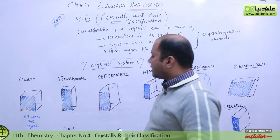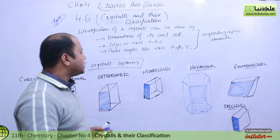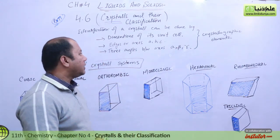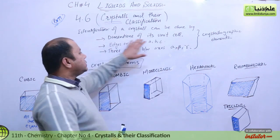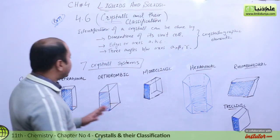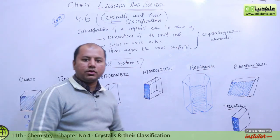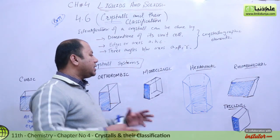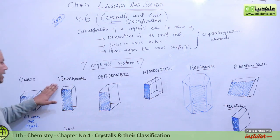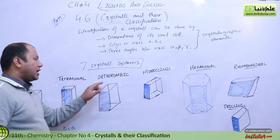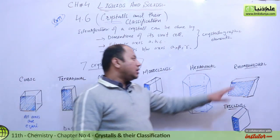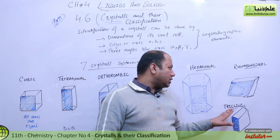Now I have to tell you about crystals. If you identify them, there are some crystallographic elements that you can study — there are dimensions of its units. We get seven types: there are seven crystal systems. These are the cubic crystal system, tetragonal crystal system, orthorhombic crystal system, monoclinic, hexagonal crystal system, rhombic and rhombohedral crystal system, and trigonal crystal system.